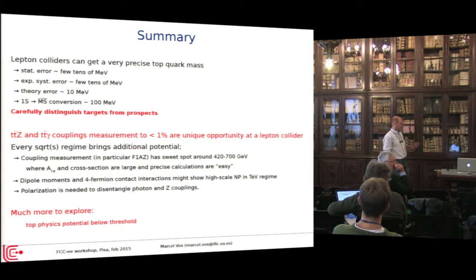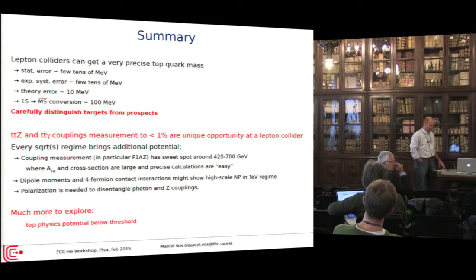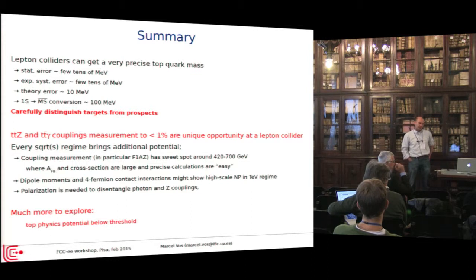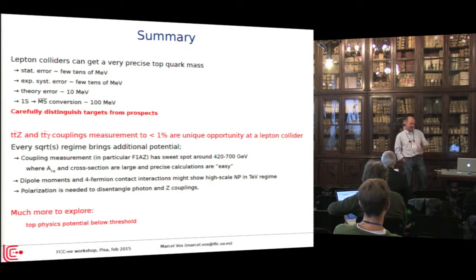I'm sure we would do it that way if it would give us a better uncertainty. But I can't tell you what the reason is why directly extracting the MS-bar mass from the shape has a larger error than extracting the 1S mass. Obviously, numerically, it's much further away. The 1S mass is right at the threshold, while the MS-bar mass is 10 GeV away.